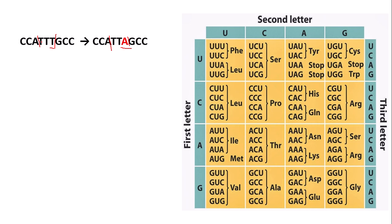Before the substitution the codon is TTT, and after it's TTA. In the genetic code, T is replaced with uracil, so TTT will be UUU, which codes for phenylalanine. However, TTA — or UUA in our genetic code — encodes leucine. So the amino acid sequence is different.